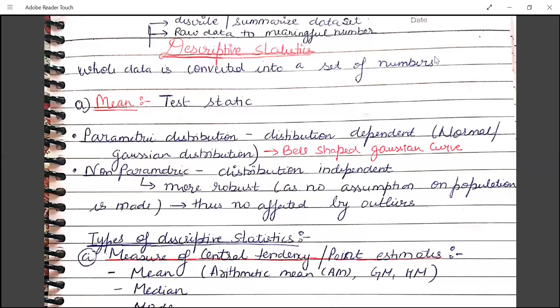Hello everyone. Now we will start with descriptive statistics. Descriptive statistics is a branch of statistics in which we basically summarize raw data into meaningful numbers, which can be either mean, median, mode, standard deviation, and so on.